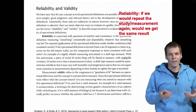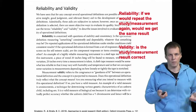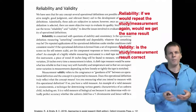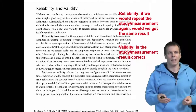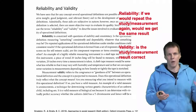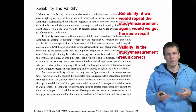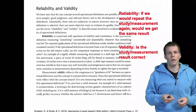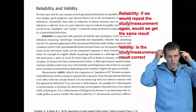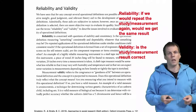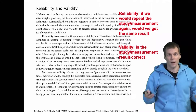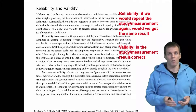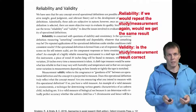Validity is concerned about whether the result is correct. So we can have a reliable measure that is not valid. For example, if we measure the intelligence of a person by measuring the circumference of their head using a measurement tape, that would be highly reliable but it is not a valid measure of intelligence.